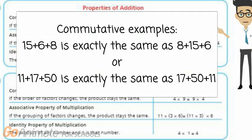Commutative examples: 15 plus 6 plus 8 is exactly the same as 8 plus 15 plus 6, or 11 plus 17 plus 50 is exactly the same as 17 plus 50 plus 11.